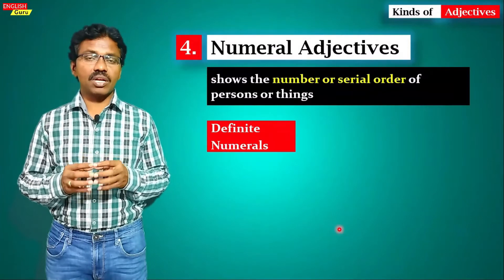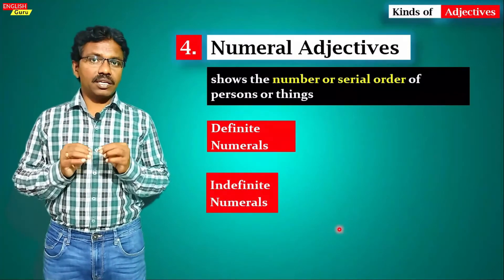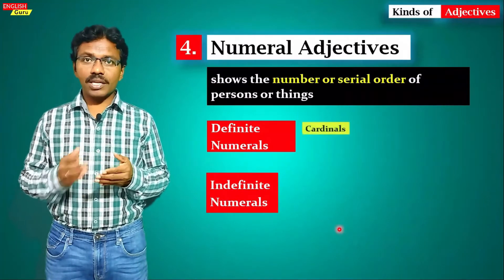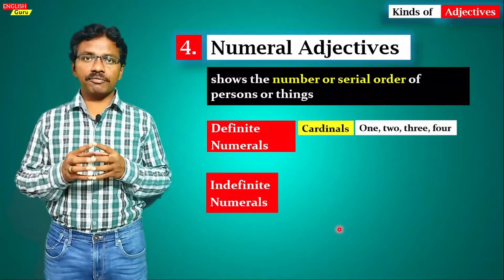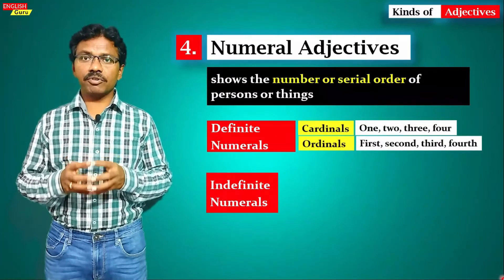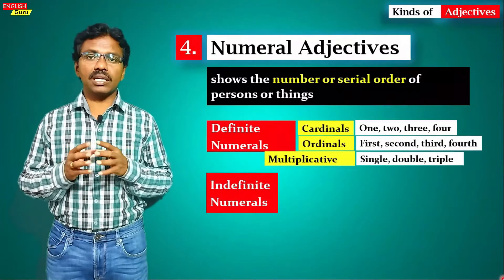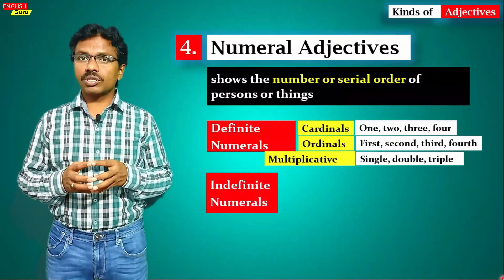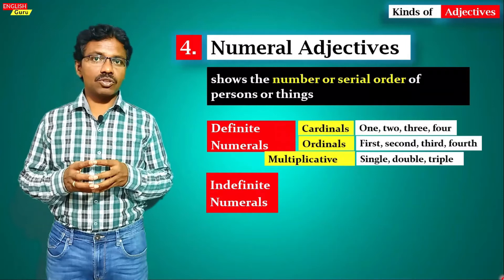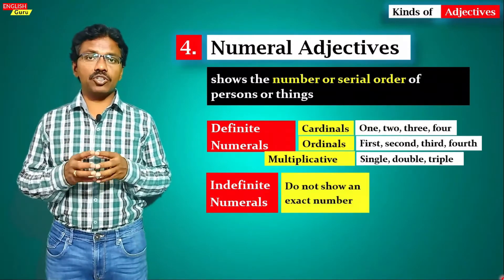The first kind is definite numeral adjectives and the second is indefinite numeral adjectives. In definite numeral adjectives, we have cardinals like one, two, three, four, ordinals like first, second, third, fourth, and multiplicatives like single, double, triple. These are all definite numerals.